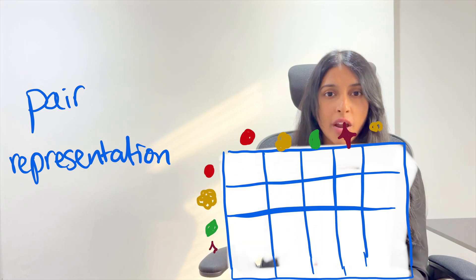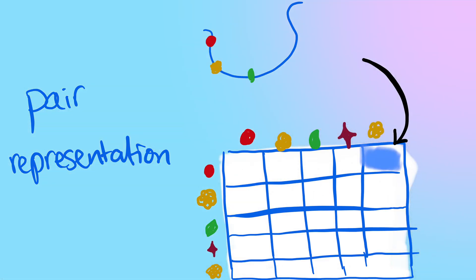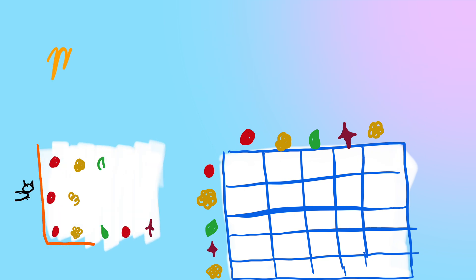So in other words, it's a matrix where each entry represents a pair and maybe encodes some information about them. So for example, how far apart are they, or what angle are they relative to each other, that sort of thing.